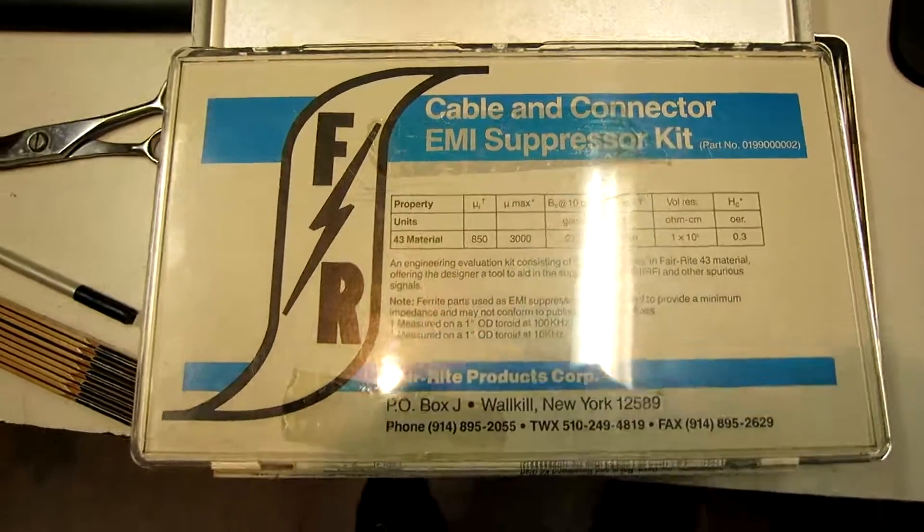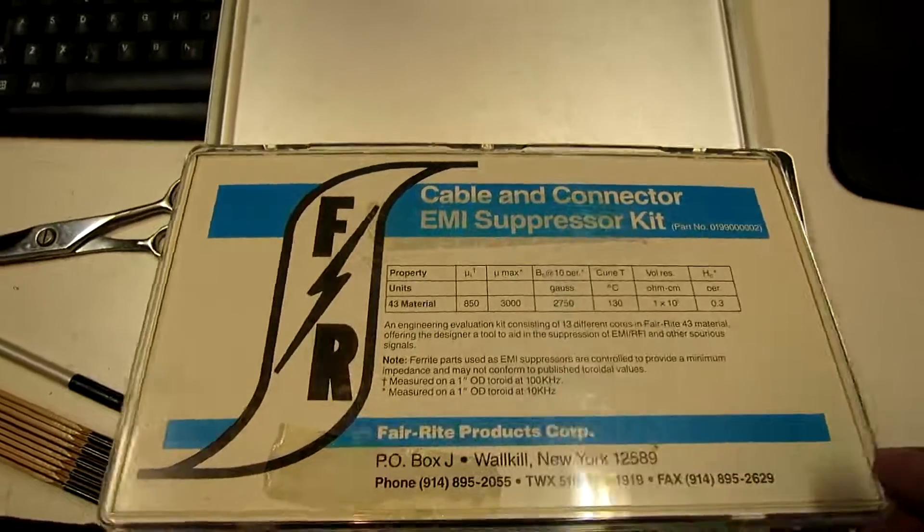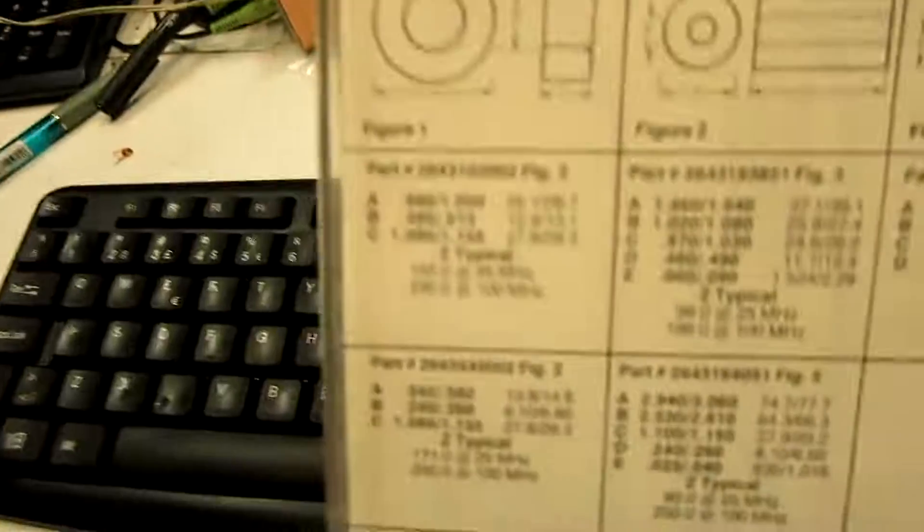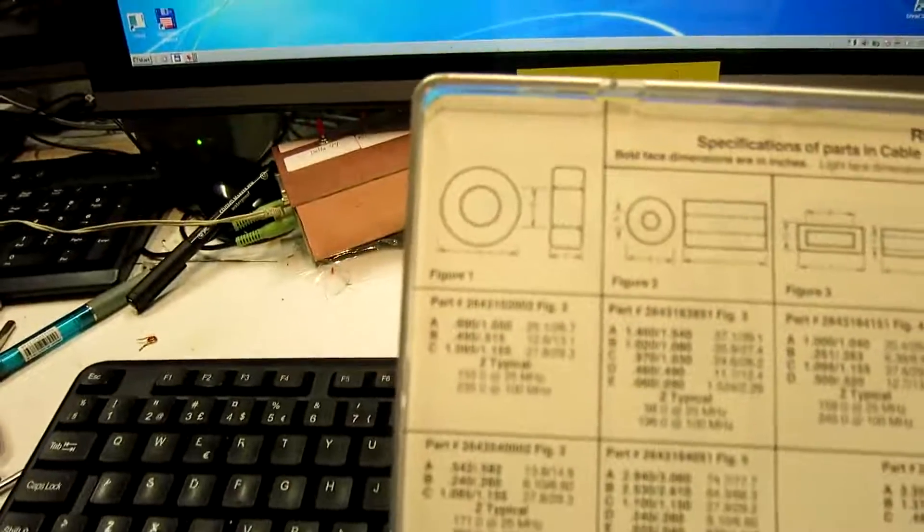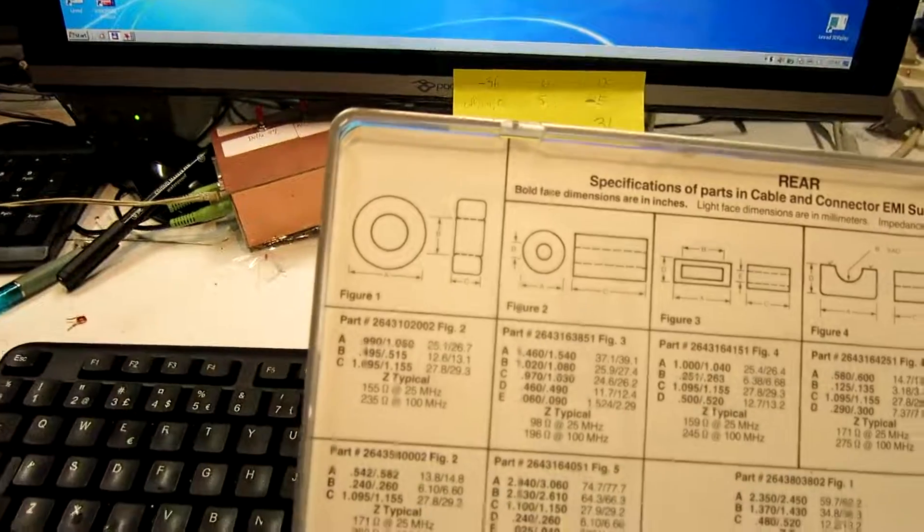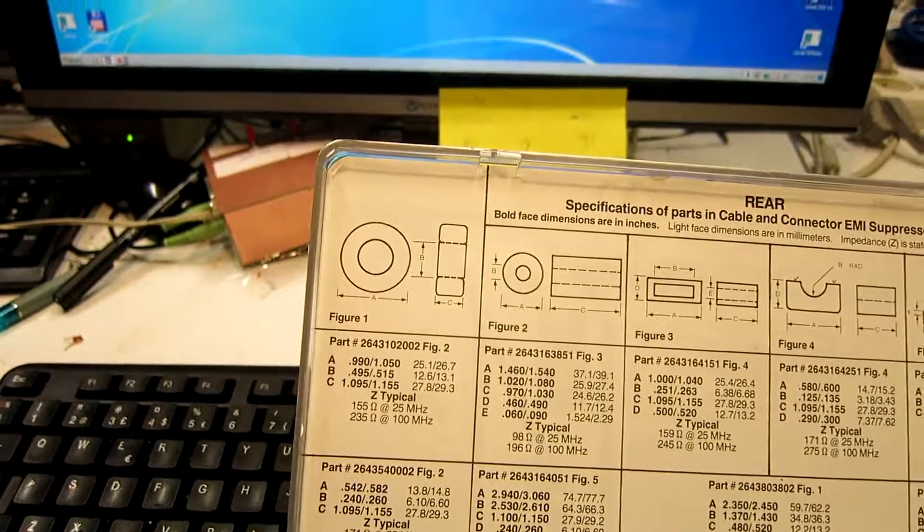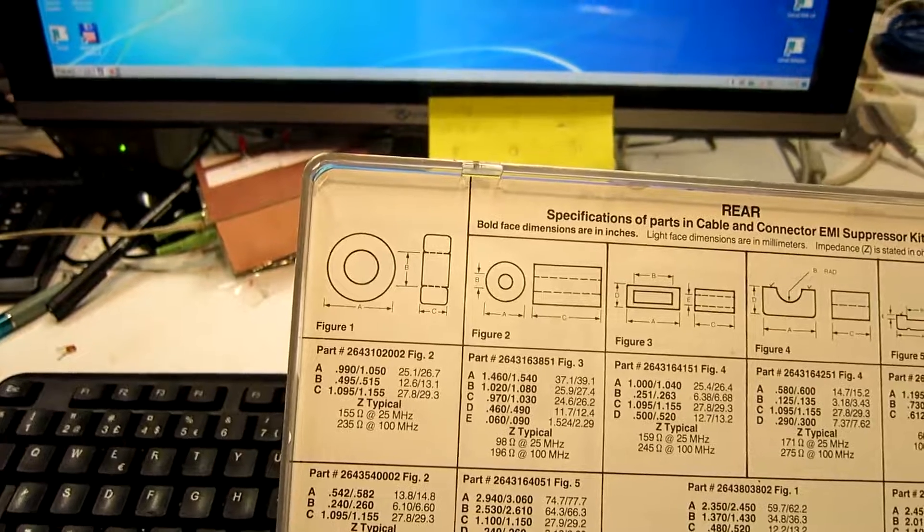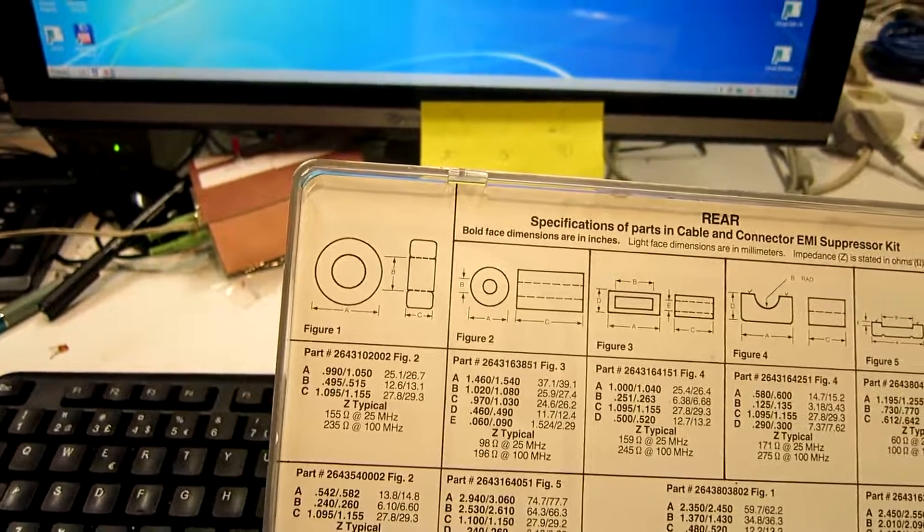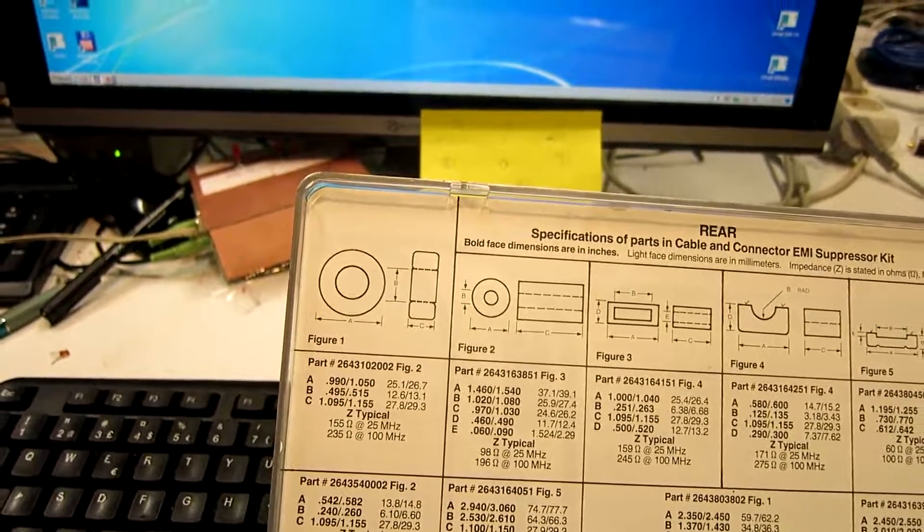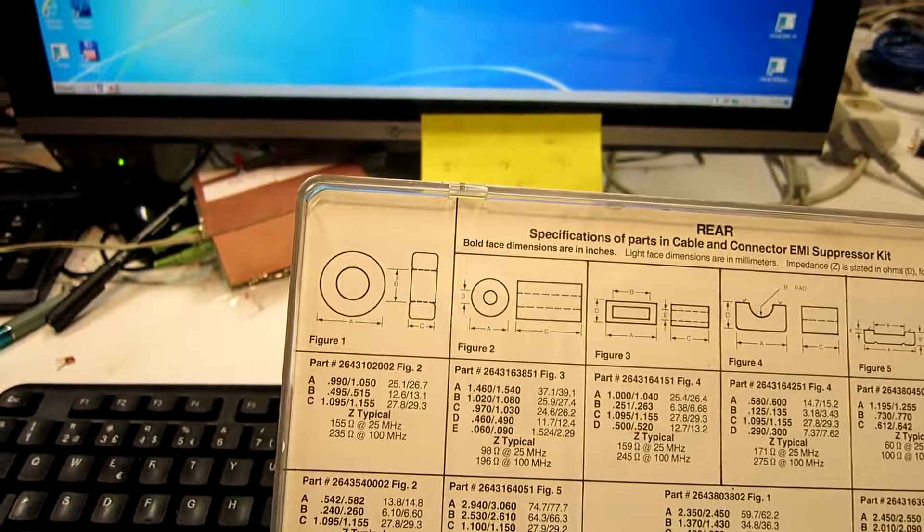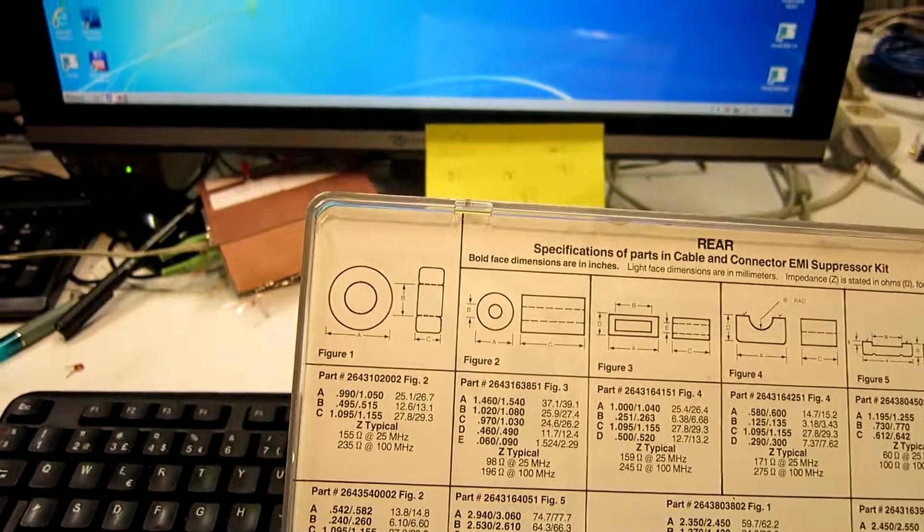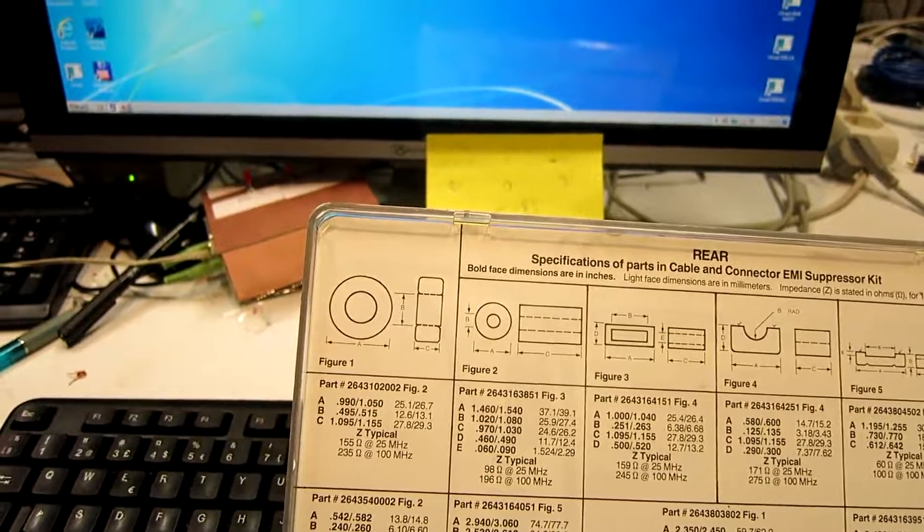This is where it comes from. And it is this one. And the datasheet says 235 ohms at 100 megahertz. And it's two turns, so it should be four times that. And that is, what could it be, 900 ohms or something like that.